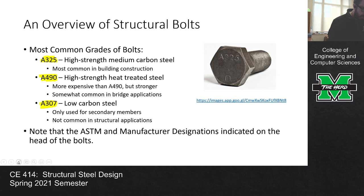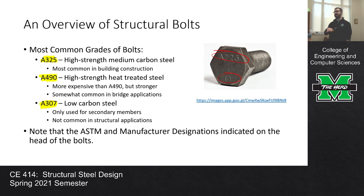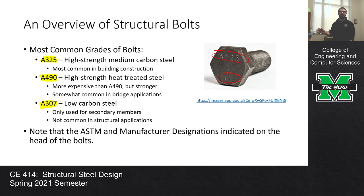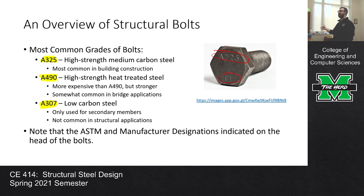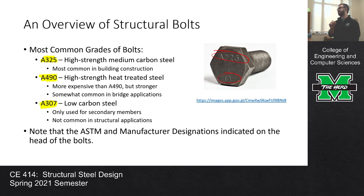Whenever you see a structural bolt, you'll tend to see two symbols on the head. The first is the grade — for example A325 — which is the ASTM specification that bolt must meet. If you've had CE321, you know all about ASTM standards. When we mention A36 steel or A572 grade 50, those are all ASTM specifications. The second symbol is the manufacturer designation — for instance, a bolt manufactured by Nucor would have a little N. So there's always two symbols: one for ASTM spec and one for the manufacturer.